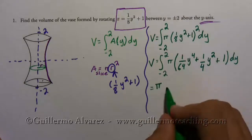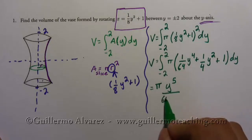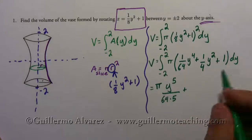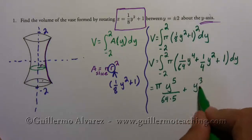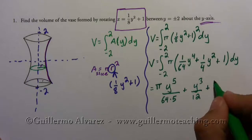All right, so then the anti-derivative of this guy is going to be y to the fifth over sixty-four times five, plus y to the third over twelve, plus y.